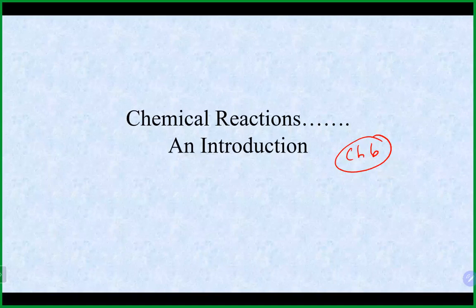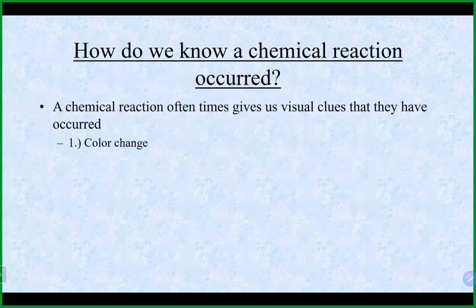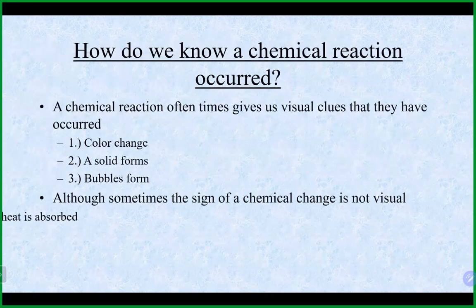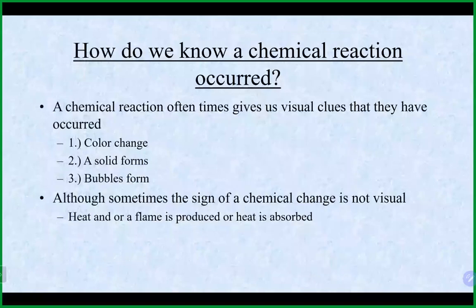Chapter six is a short chapter about chemical equations and balancing equations. We'll talk about approaches to balance equations and then jump into chapter seven, which covers different types of reactions and ways to classify reactions.